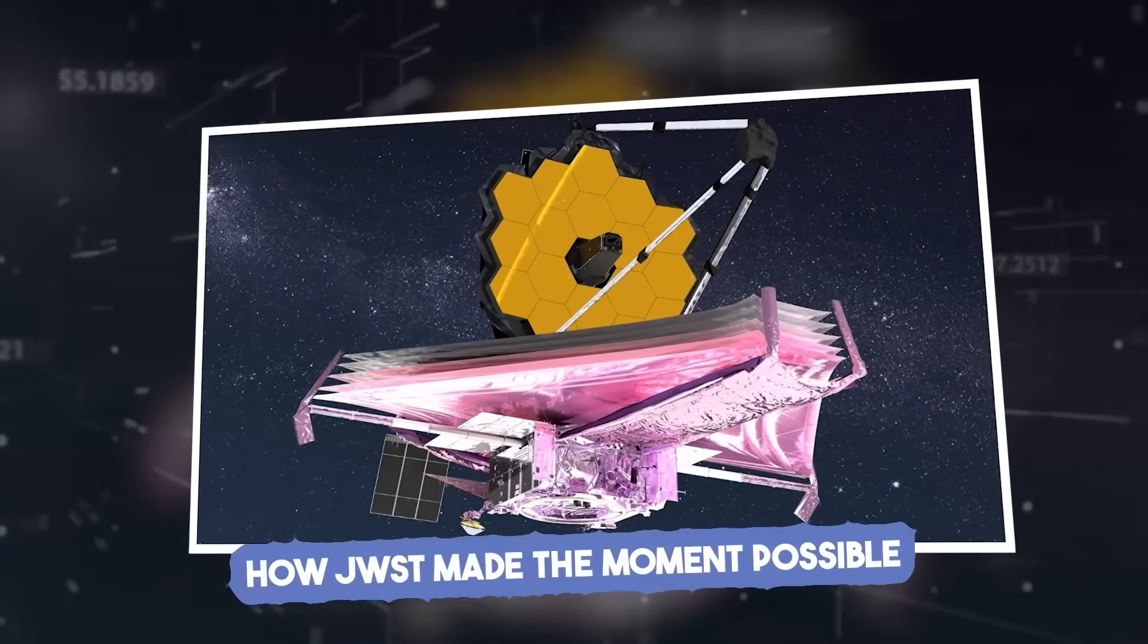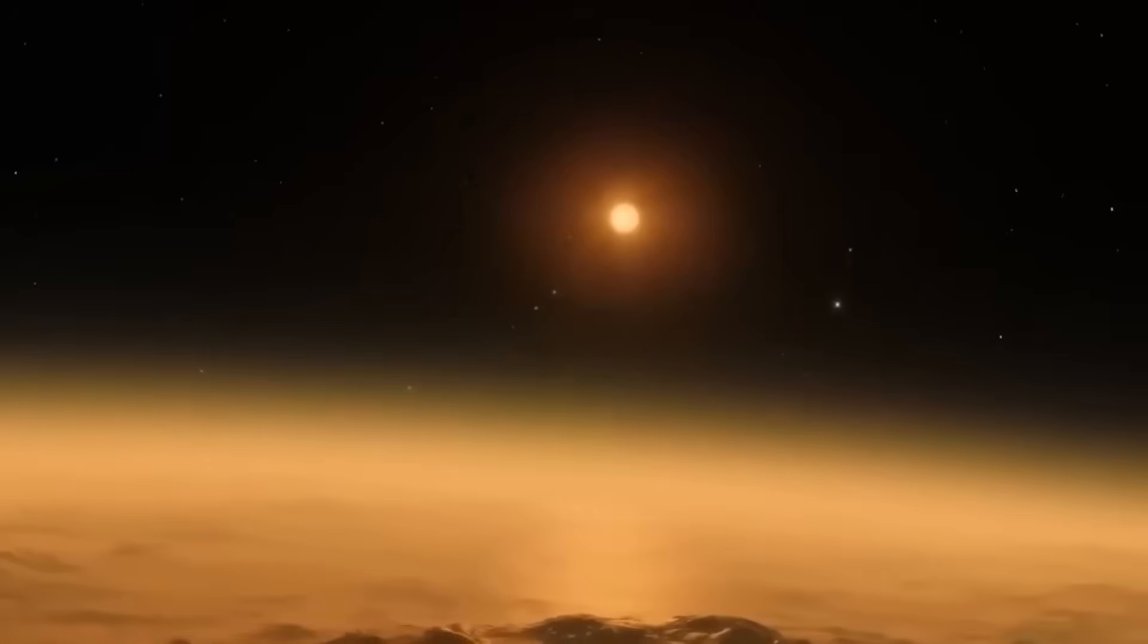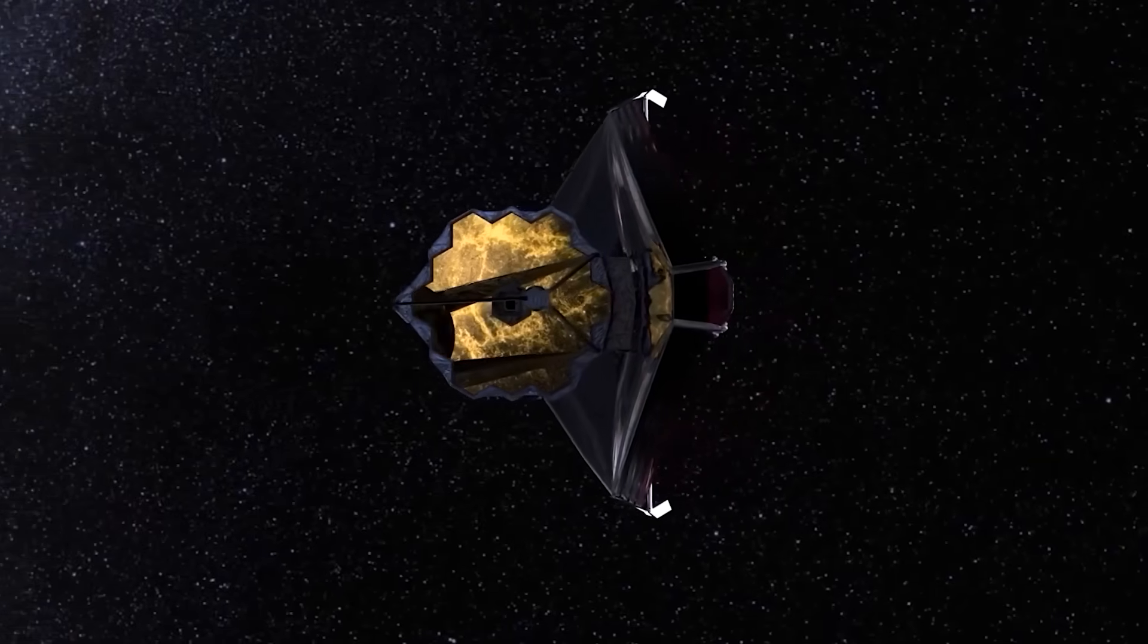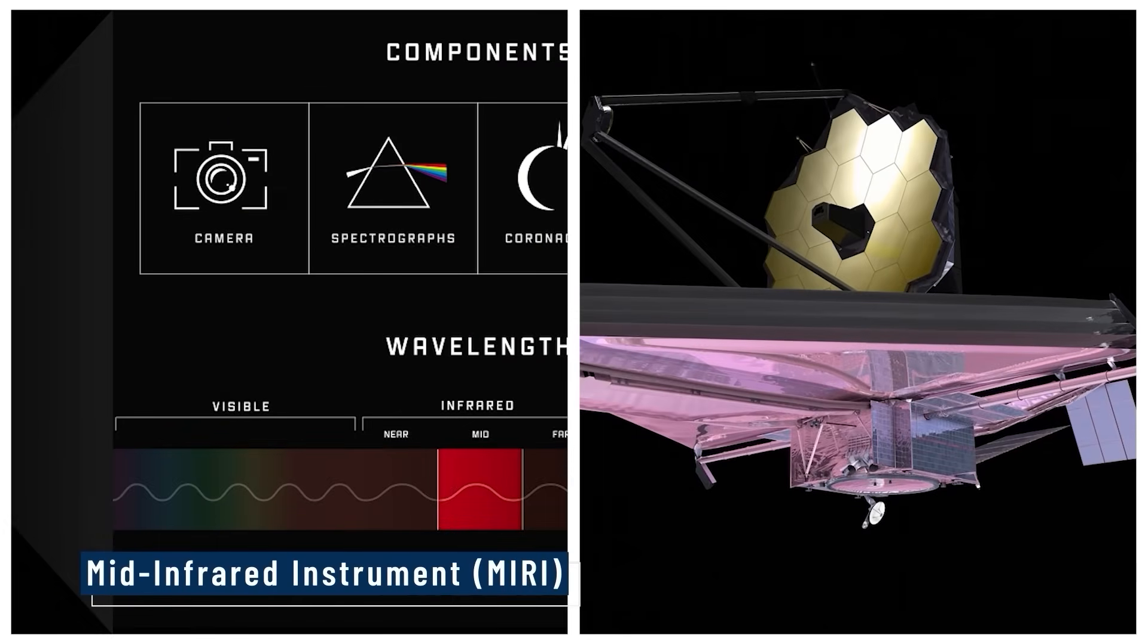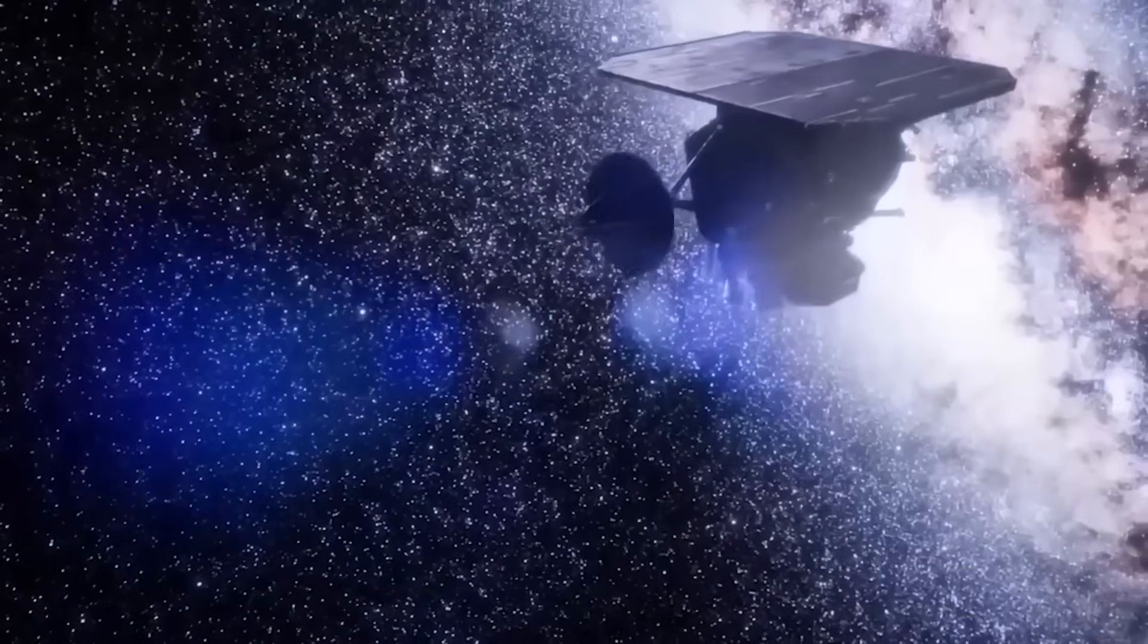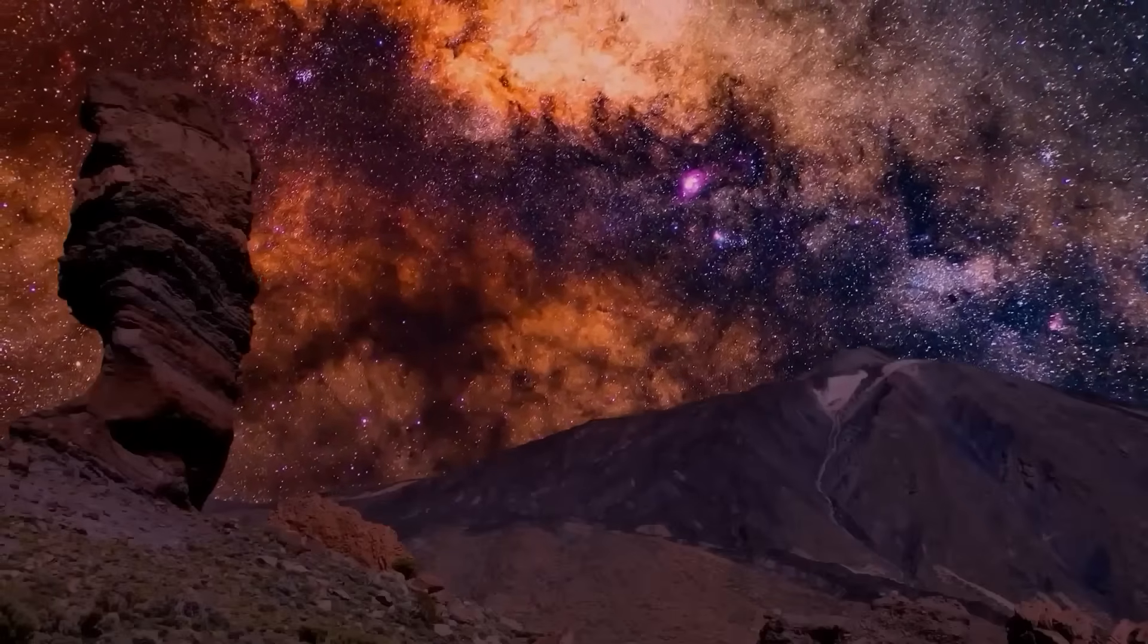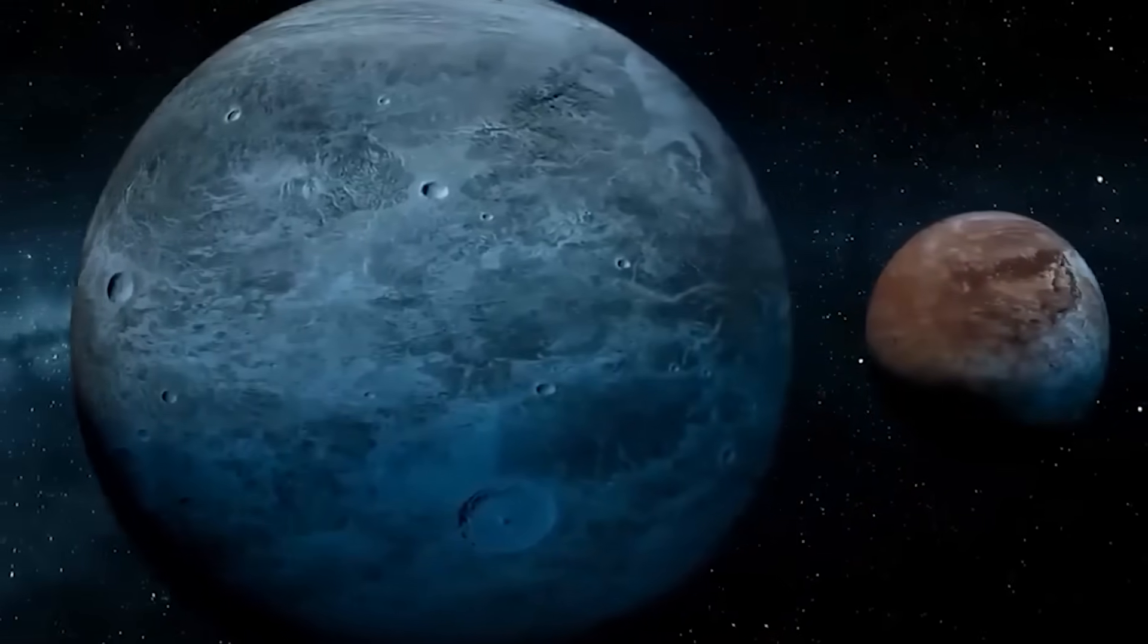How JWST Made the Moment Possible. Imagine trying to spot a tiny glow next to a floodlight. That's what finding a planet next to its star is like. JWST made it possible through clever tools and teamwork. Inside its mid-infrared instrument, MIRI, it has a coronagraph, a special mask built by French engineers. This mask acts like an artificial eclipse, blocking the star's brightness so that fainter objects nearby can be seen.